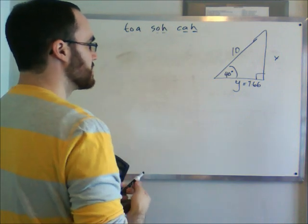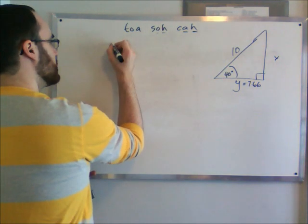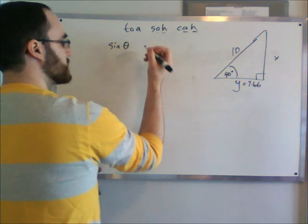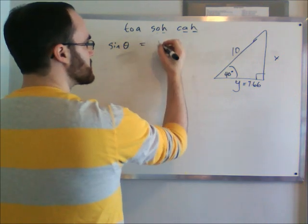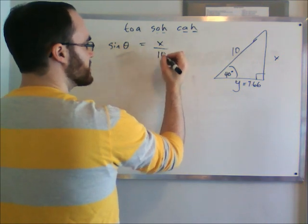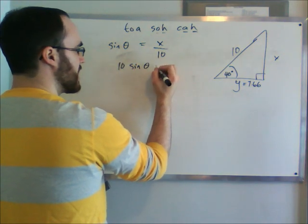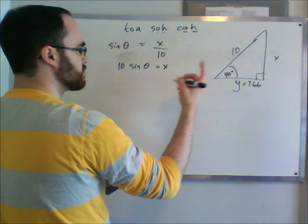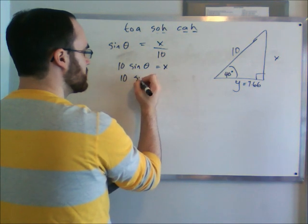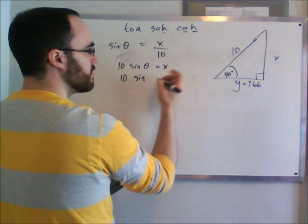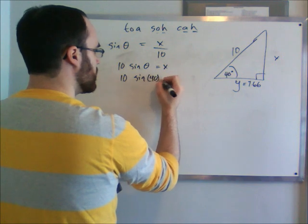Our sine ratio is going to say that sine theta, or sine of the angle, equals the opposite, which is x, over the hypotenuse, which is 10. Rearrange to get 10 sine of the angle equals x. So 10 sine of 40 equals x.